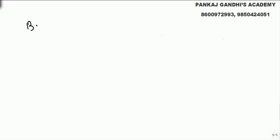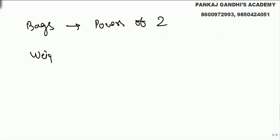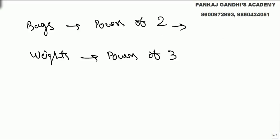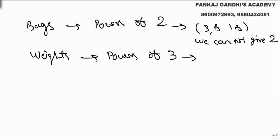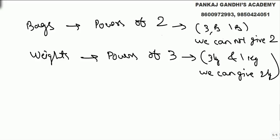So what we learned is: in the case of bags we need powers of 2, and in the case of weights we need powers of 3. This is because with bags you cannot say take this and subtract this — using bags of 3 rupees and 1 rupee you cannot give 2 rupees. But using 3 kg and 1 kg weights you can give 2 kg. So for the money/bags question it's powers of 2, and for weights it's powers of 3.